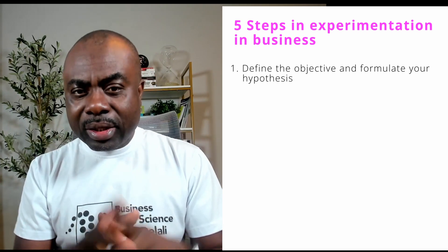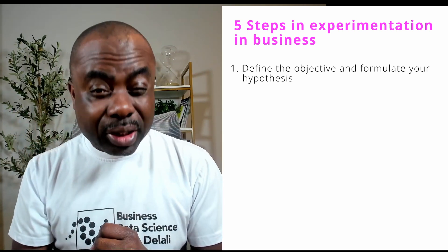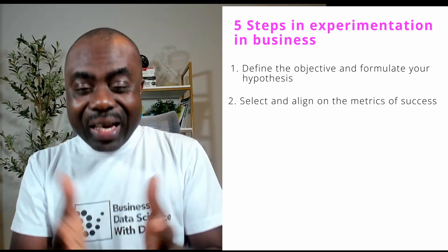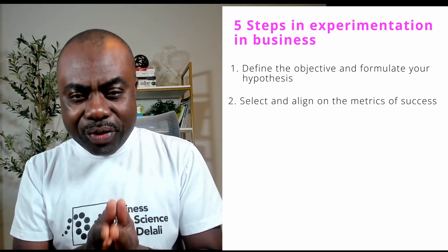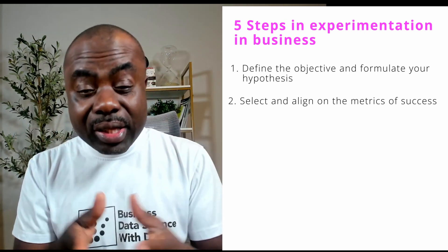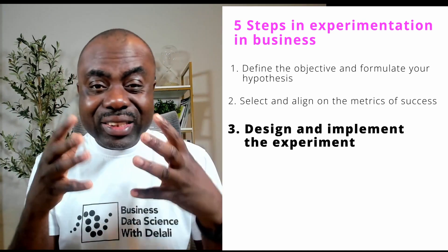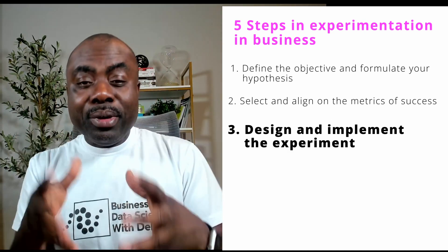In one of our videos, we actually talked about the five steps in an experimentation in business. We talked about the first step as coming up with the objective and the hypothesis. The second step was aligning on the business metrics of measurement within the experiment. And then the third step is actually designing and implementing the experiment. So today our discussion is going to be focused on designing and implementing the experiment, which is step number three.